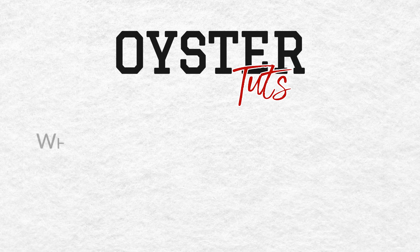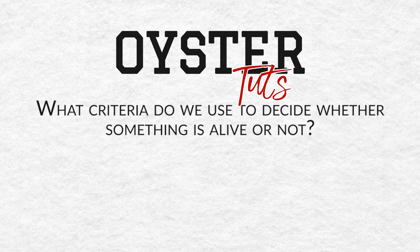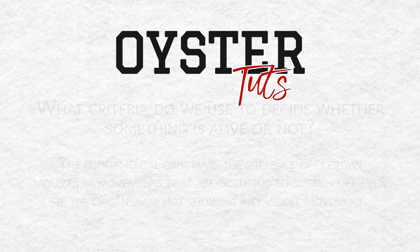Question number two: what criteria do we use to decide whether something is alive or not? As discussed at the very beginning of this video, the fundamental criteria is molecular movement that is occurring to sustain life, even if the organism is not showing any visible movement.